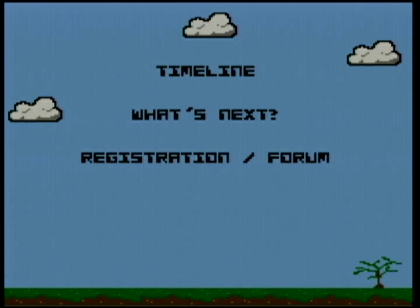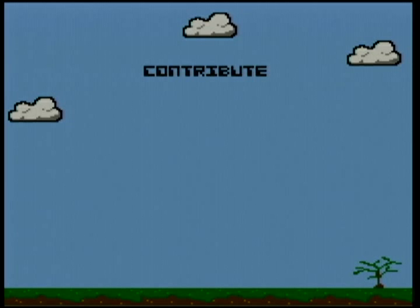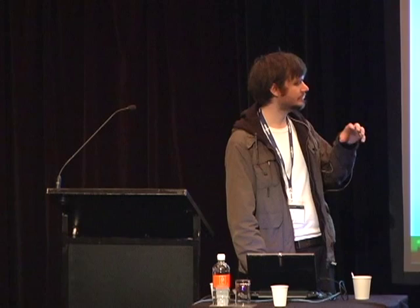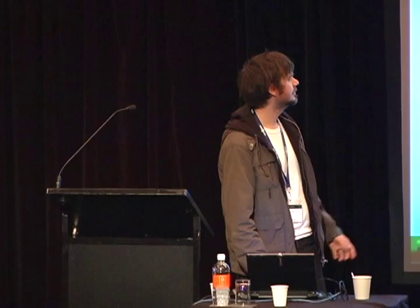So how do you contribute if you'd like to hack on this? These instructions are directly off the website at infiniteplatformer.com. It's quite simple — I'm using Bazaar for version control. You check out the source code, check out the library pod6net, and check out the pod6 library. Those are libraries I developed for building other games but I also use them in this one. Here are the dependencies — pretty straightforward. You can run the client normally, run the server, and there's a great new thing I added recently which is the server console, which gives you a live Python prompt inside the server so you can inspect how many clients there are and all that.